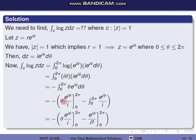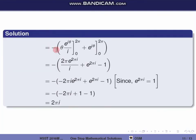Using integration by parts: minus times [theta times integral of e raised to i theta, which is e raised to i theta divided by i, evaluated from 0 to 2π, minus integral from 0 to 2π of 1 times e raised to i theta divided by i d theta]. Integrating the remaining term gives minus e raised to i theta divided by i squared, evaluated from 0 to 2π. Since i squared equals minus 1, the minus signs combine to give a positive term. So the result is: minus [theta times e raised to i theta divided by i from 0 to 2π] plus [e raised to i theta from 0 to 2π].